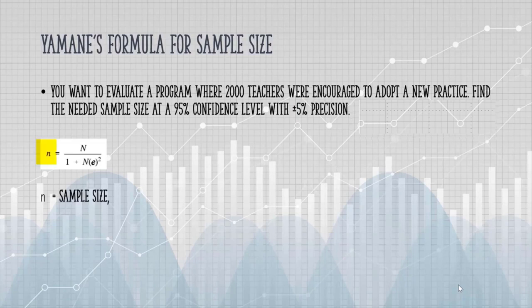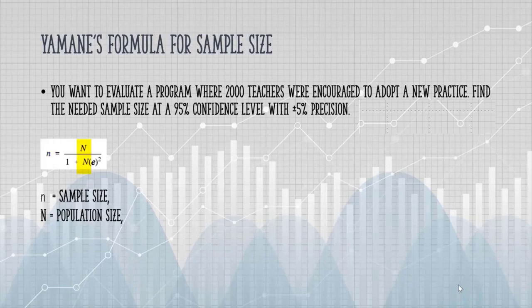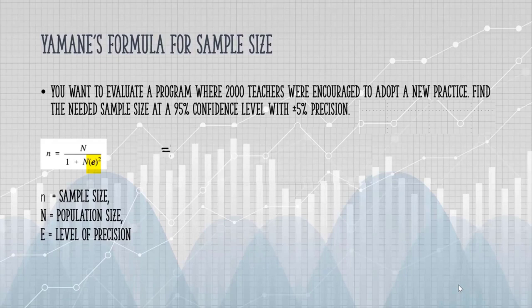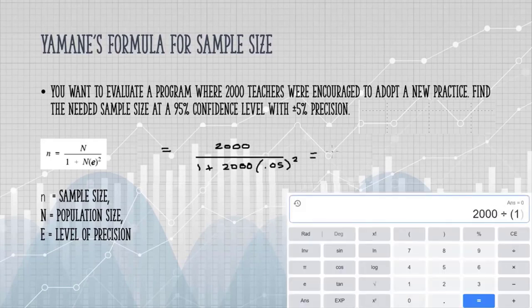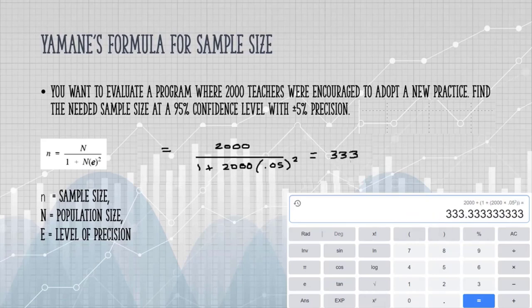Here's Yamane's formula. The small n is the sample size, and that's what we're trying to find. Capital N is the population size for this particular question, that's 2,000. And E is the level of precision that's stated as 5%. Plugging those numbers into the formula, if I work this out on a calculator, I get 333.